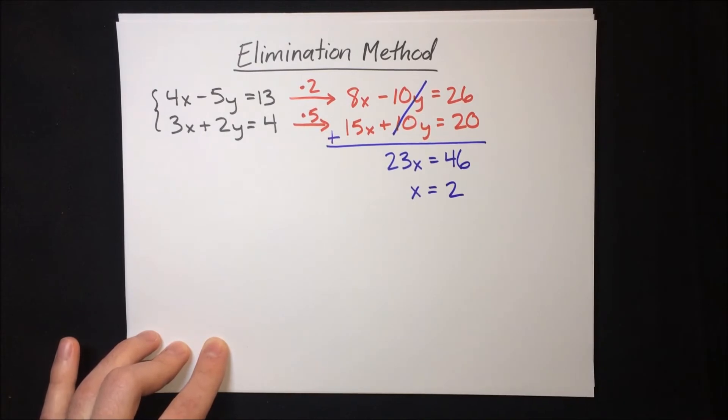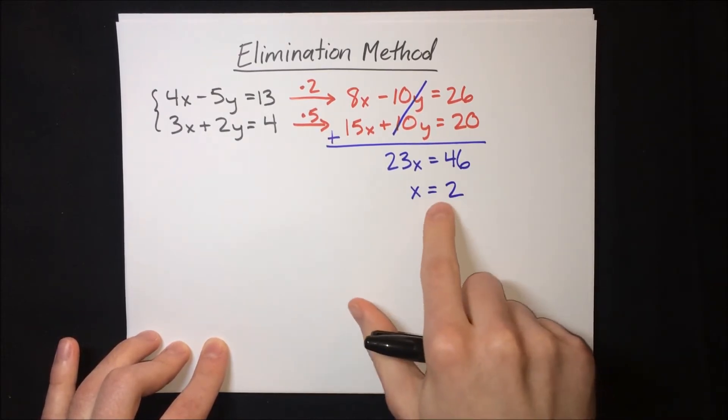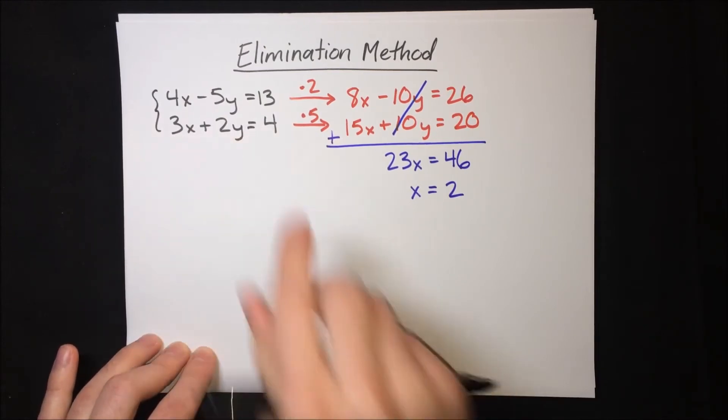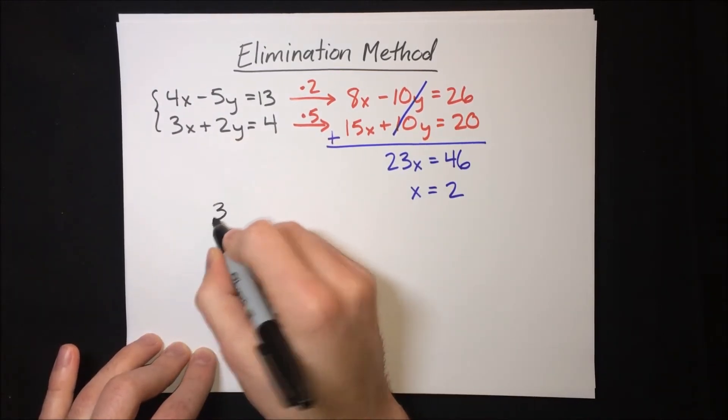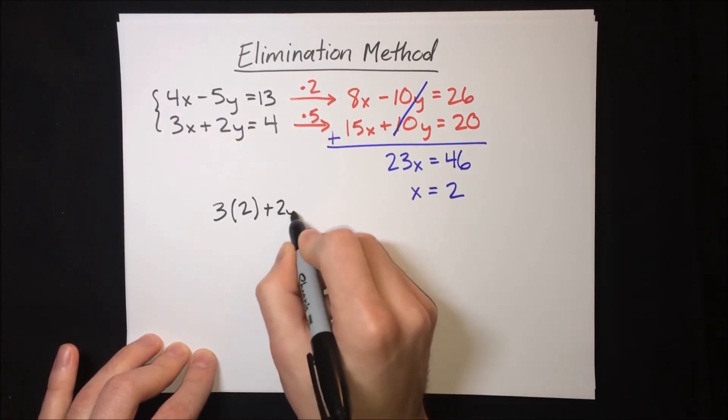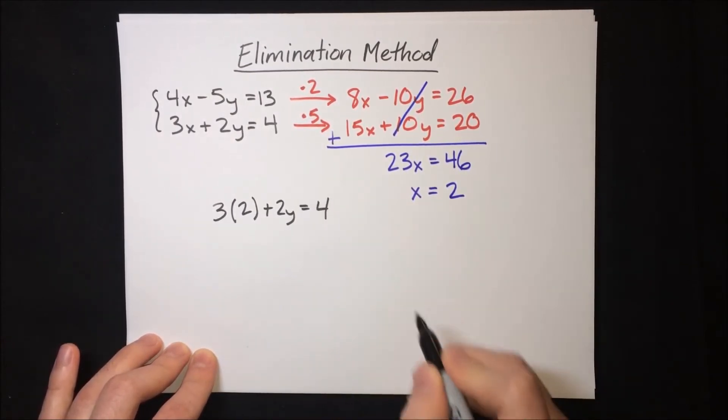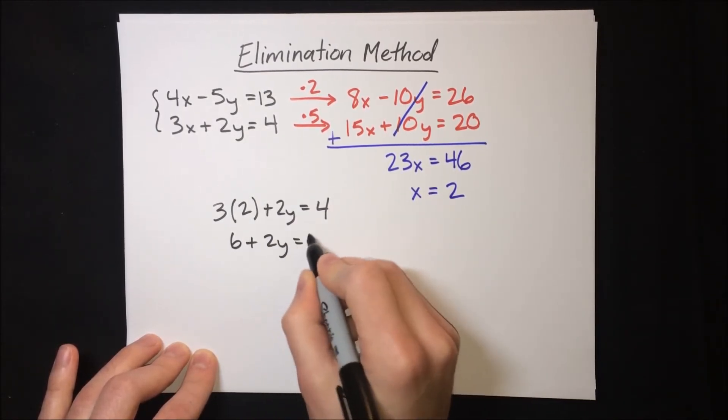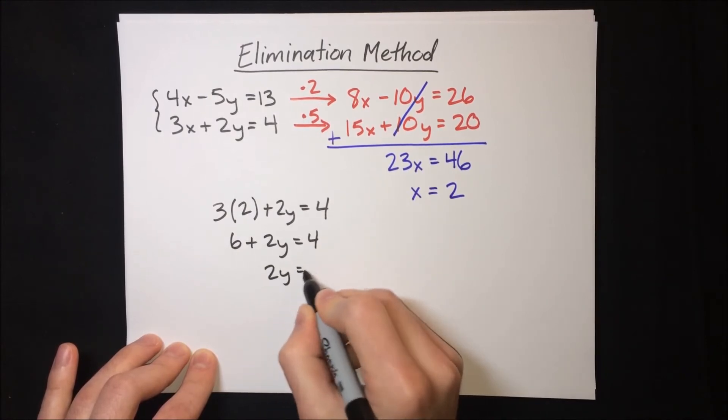Great. So we've got one of the variables and now we can just put it back into one of the equations and solve for y. Let's take the bottom equation. So 3 times 2 plus 2y equals 4. Simplifying, 6 plus 2y equals 4, 2y equals negative 2, y equals negative 1.